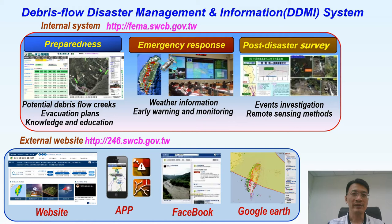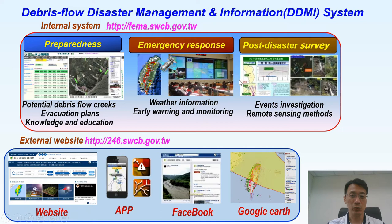The system we call the Debris Flow Disaster Management and Information System can be divided into two parts. The first part is the internal system, usually used by engineers, governors, officials, and specialists. It includes three parts of our disaster procedure: preparedness, emergency response, and post-disaster service — information we use for emergency treatment during typhoons. The other part is the external website for the public, not only the website but also apps, Facebook, and the Google Earth platform.